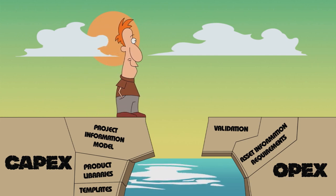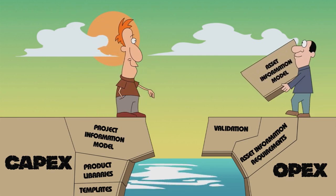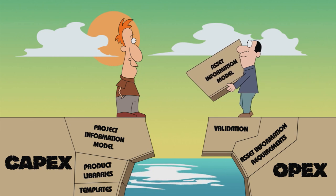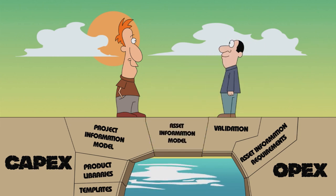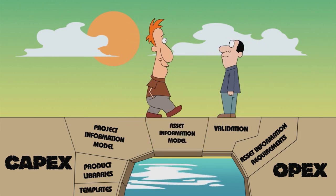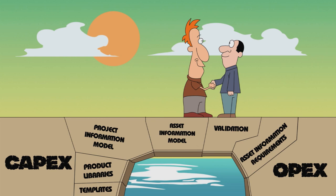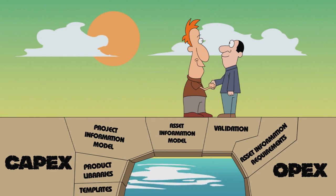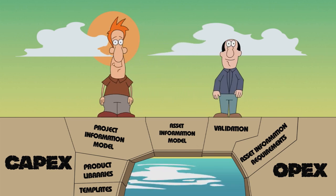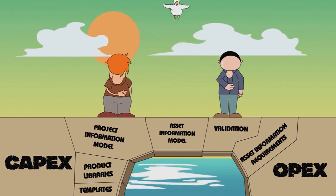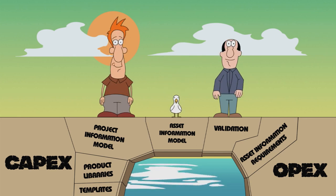The project information is automatically validated to ensure nothing is missing. The result is a tested and compliant asset information model that includes everything needed by any FM applications the OPEX team may choose to use. Why take the risk of something being missing?